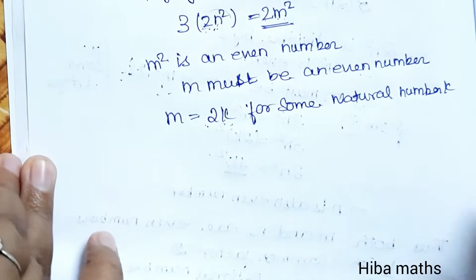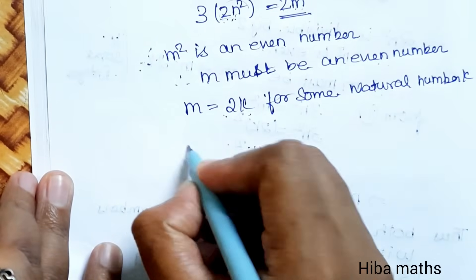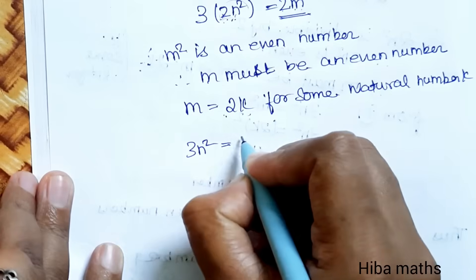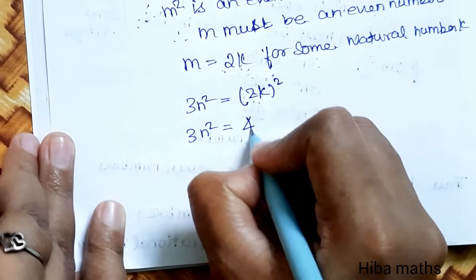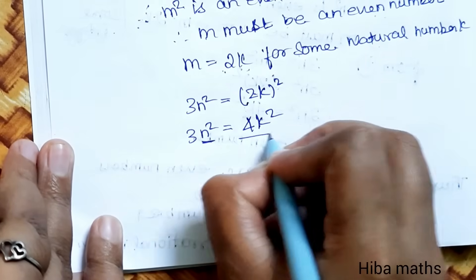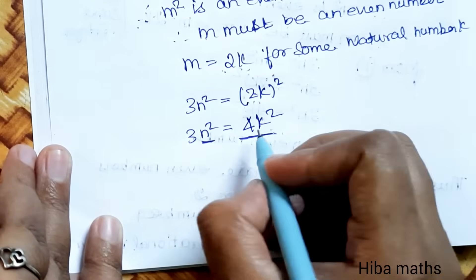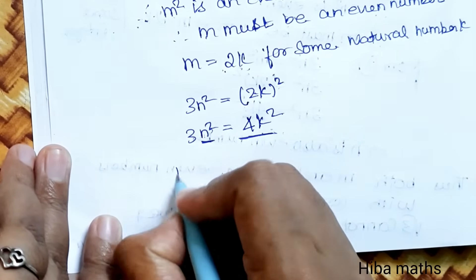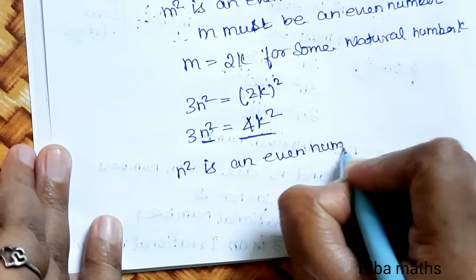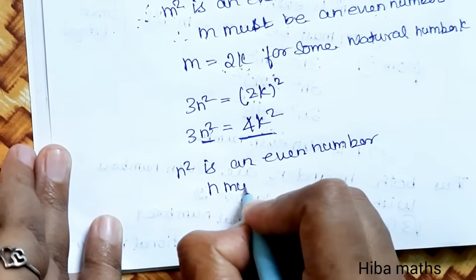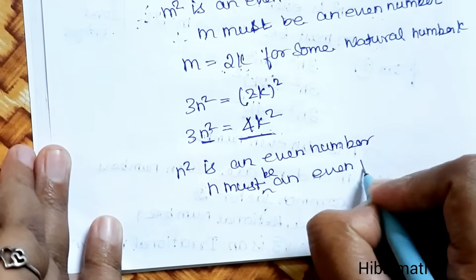Now we will substitute in the first equation. 3N square equals M square. Now, 3N square equals 2K square. 3N square equals 4K square. N square equals 4K square. 4K square is divisible by 2, so it is even number. On this side, N square is even.